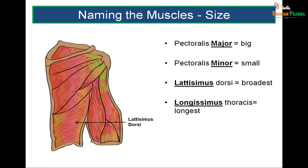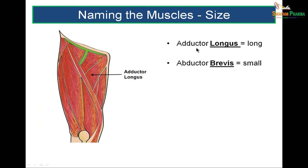Naming muscles by size: pectoralis major and minor — large or small. Latissimus dorsi is the broadest muscle of the back — latissimus means broadest. Longissimus dorsi means longest. Adductor longus means long; adductor brevis is much shorter.